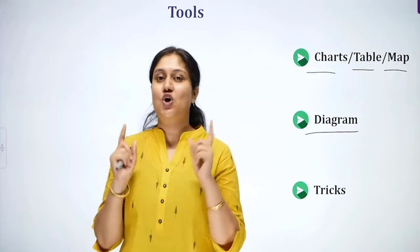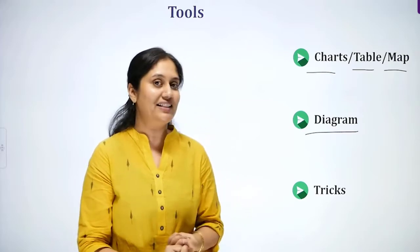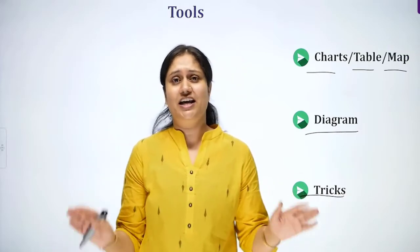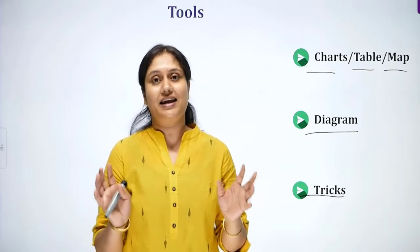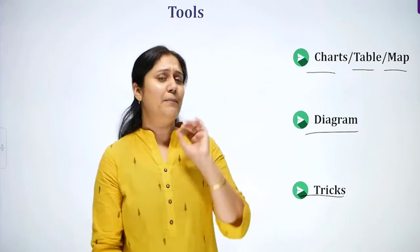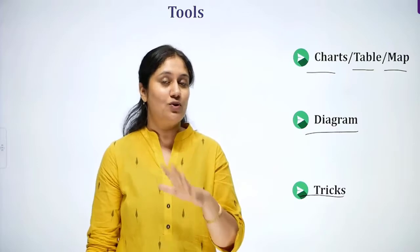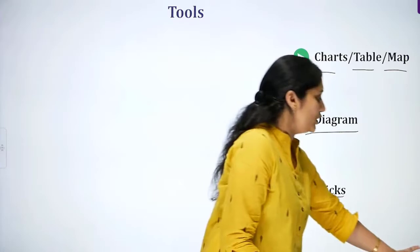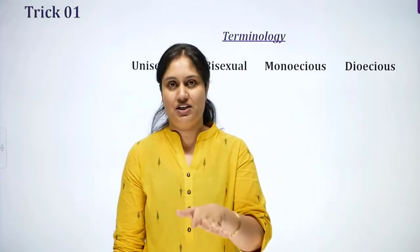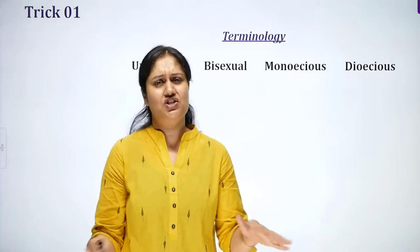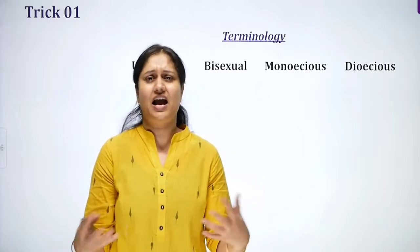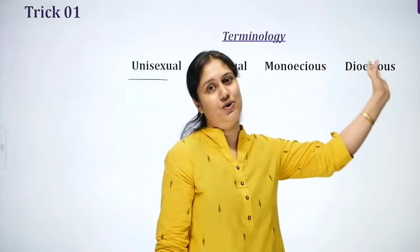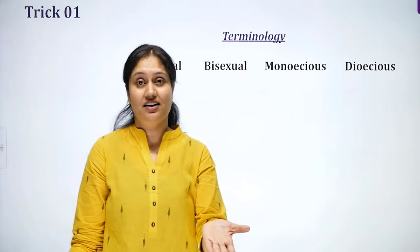But the main solution we are going to talk about in this video is tricks. Whatever confusion is created, you can make tricks to prevent them. First, we take an example from terminologies, because terminologies are very confusing. The example is: unisexual, bisexual, monoecious, and dioecious — these are 4 sexuality-related conditions.